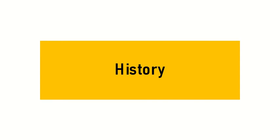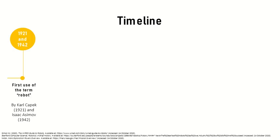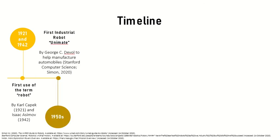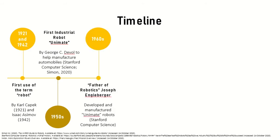Moving on to the history of robots. This timeline shows some key milestones in the field of robotics. The term robot was first used by playwright Carl Chapet in 1921 and author Isaac Asimov in 1942. But it was not till the early 1950s that the first industrial robot, Unimate, was created by George C. Duvall to help manufacture automobiles. These robots were popularized in the late 1960s when Joseph Engelberger further developed and manufactured them. Due to his contributions, Engelberger is often referred to as the father of robotics.